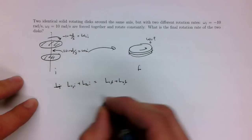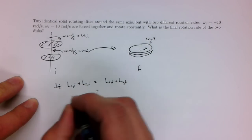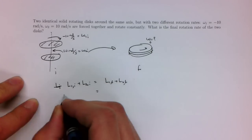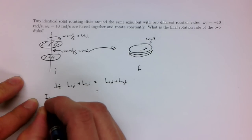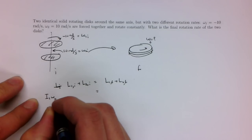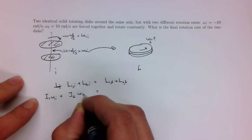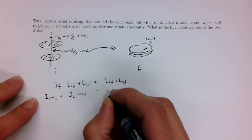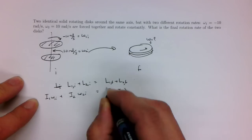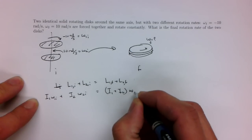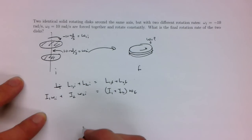So, in this case, it is identical, so it can be I1 omega 1 initial plus I2 omega 2 initial is equal to, in this case it is combined together, I1 plus I2 of omega, let's call this final.